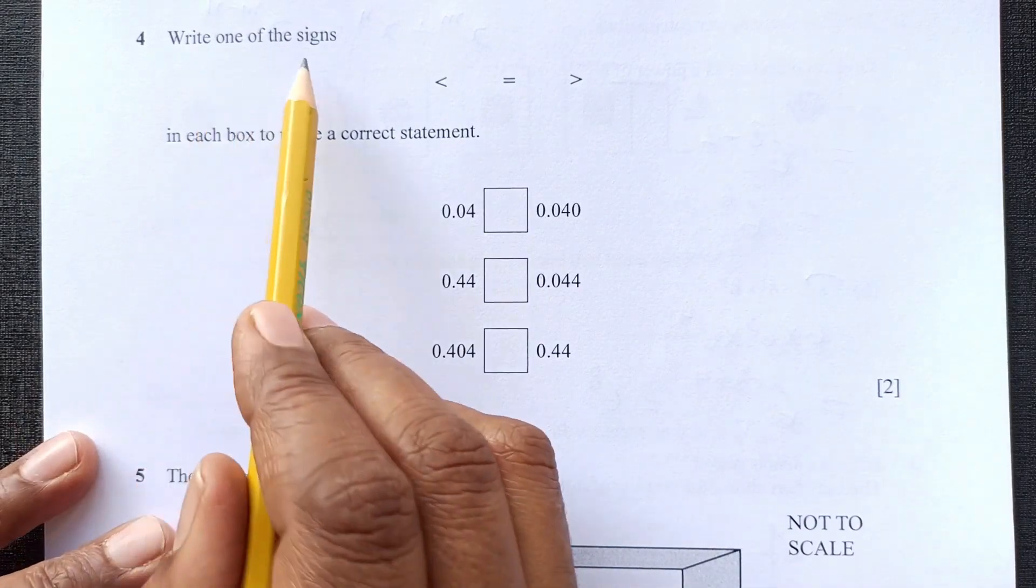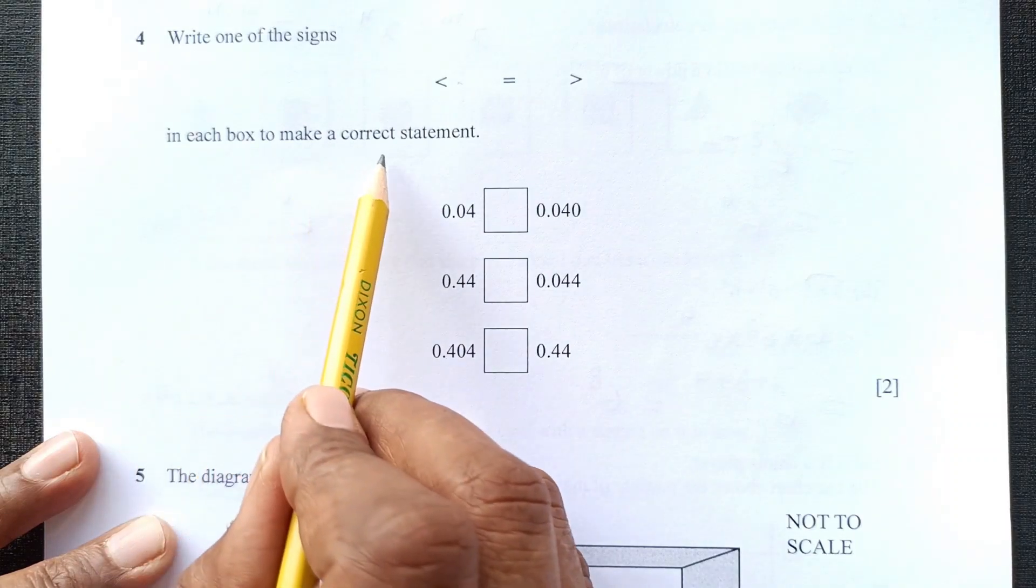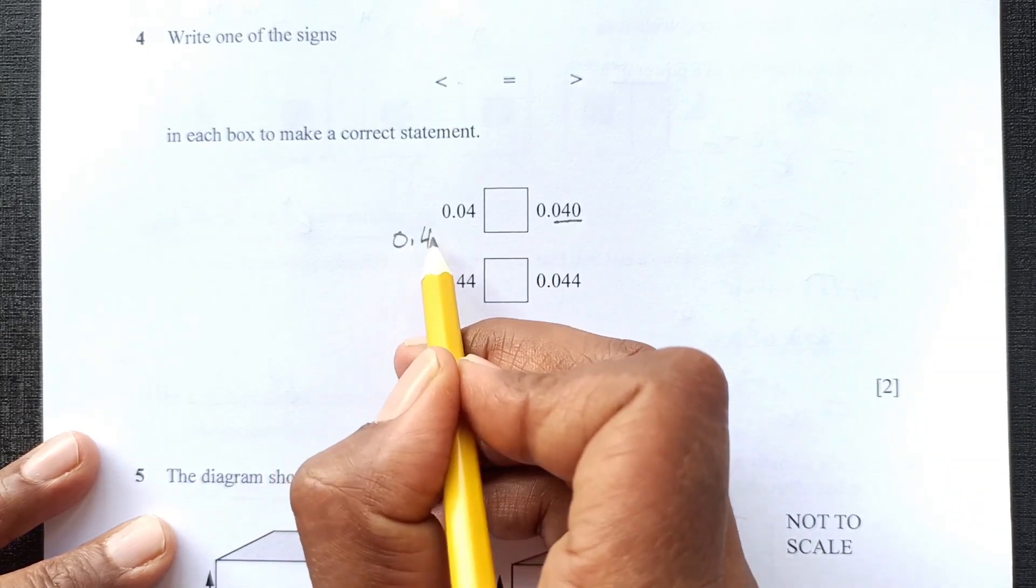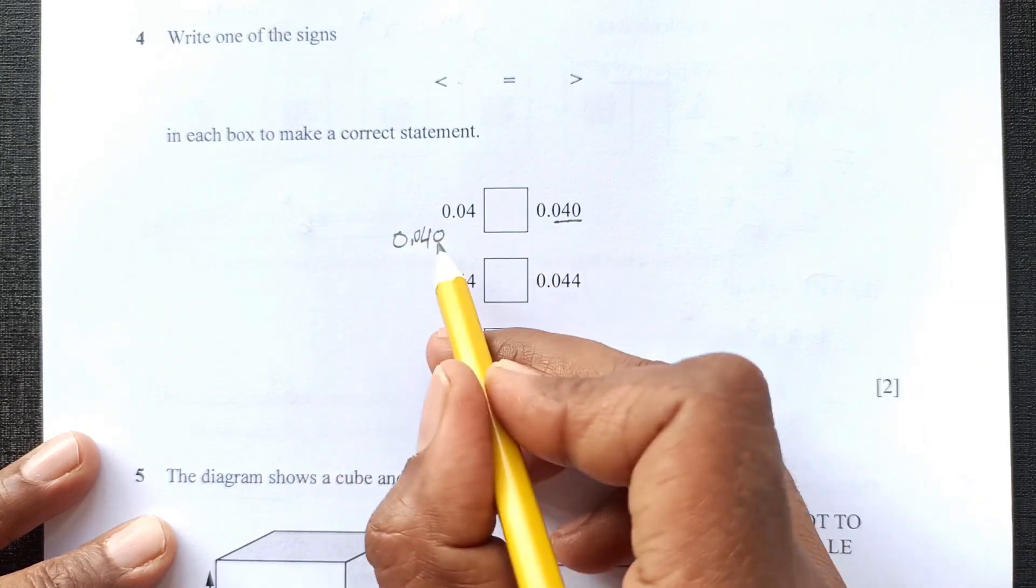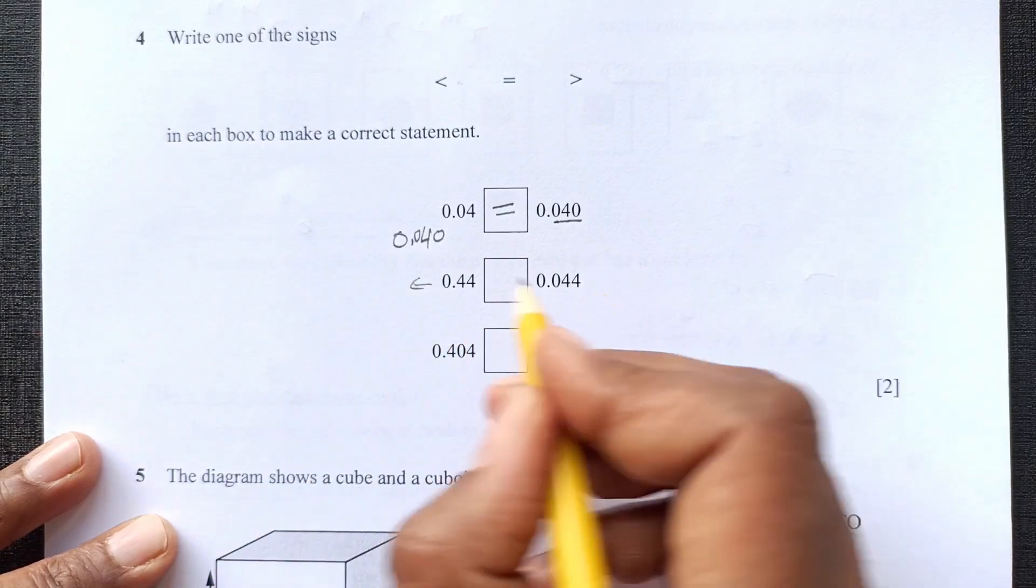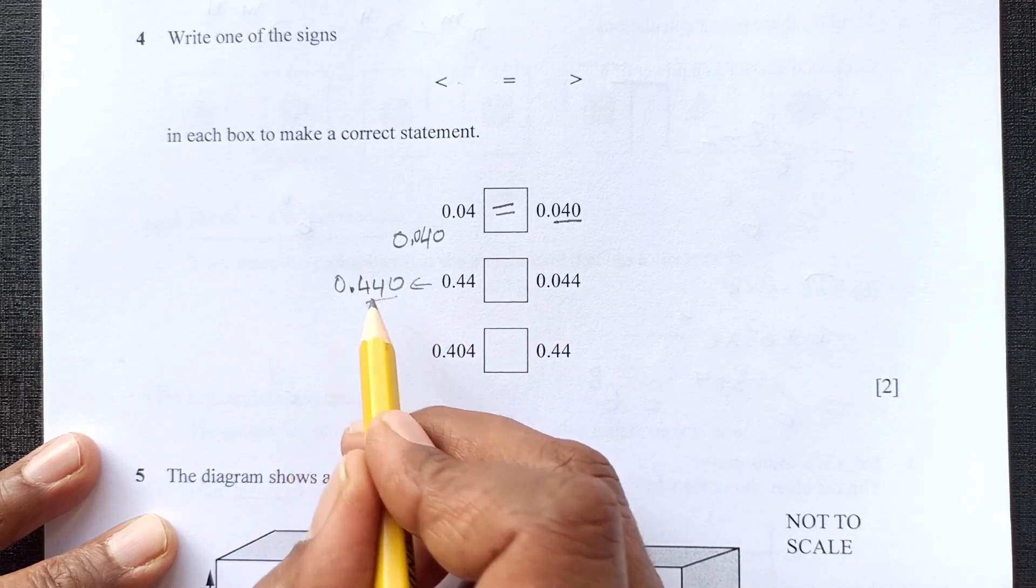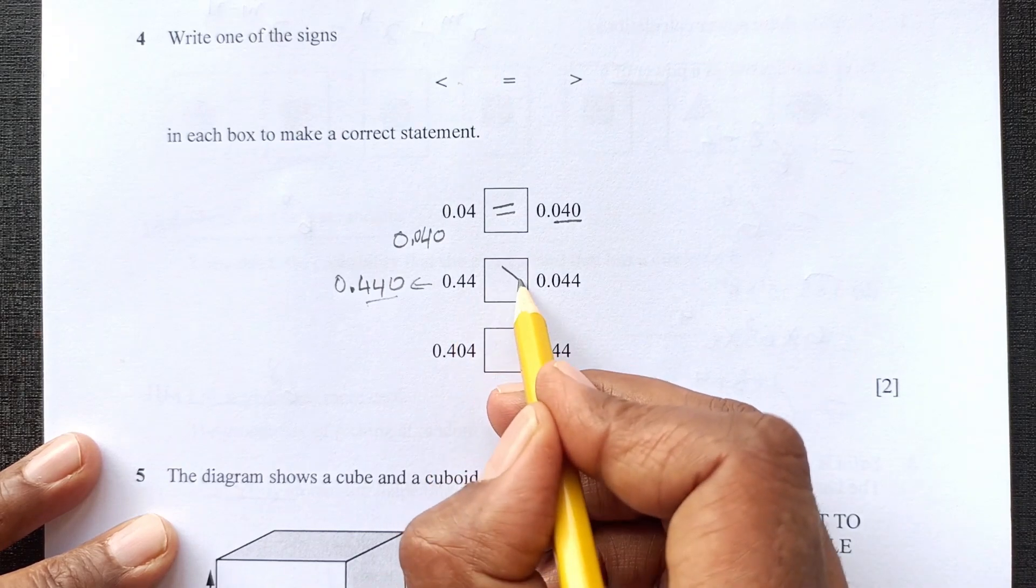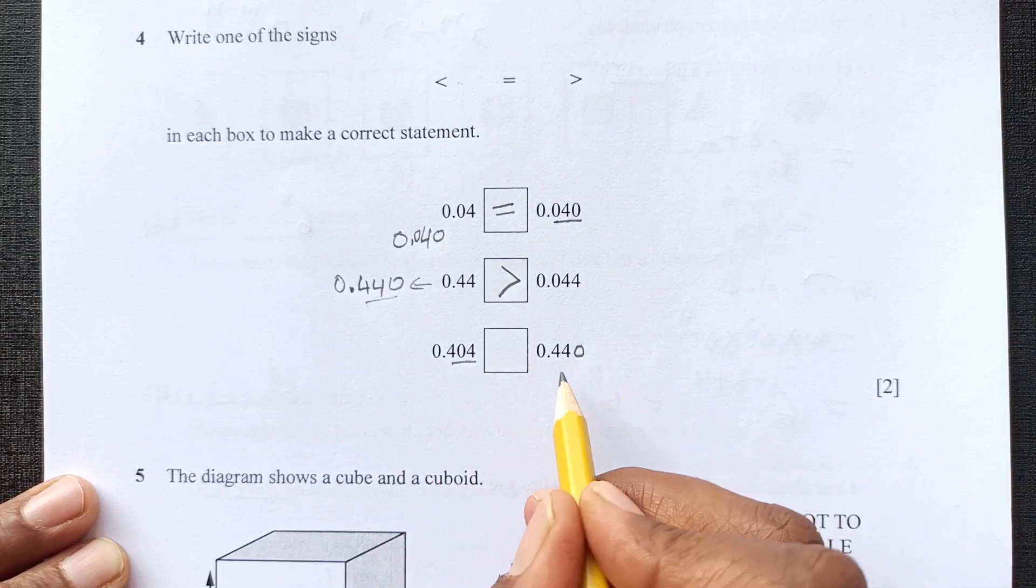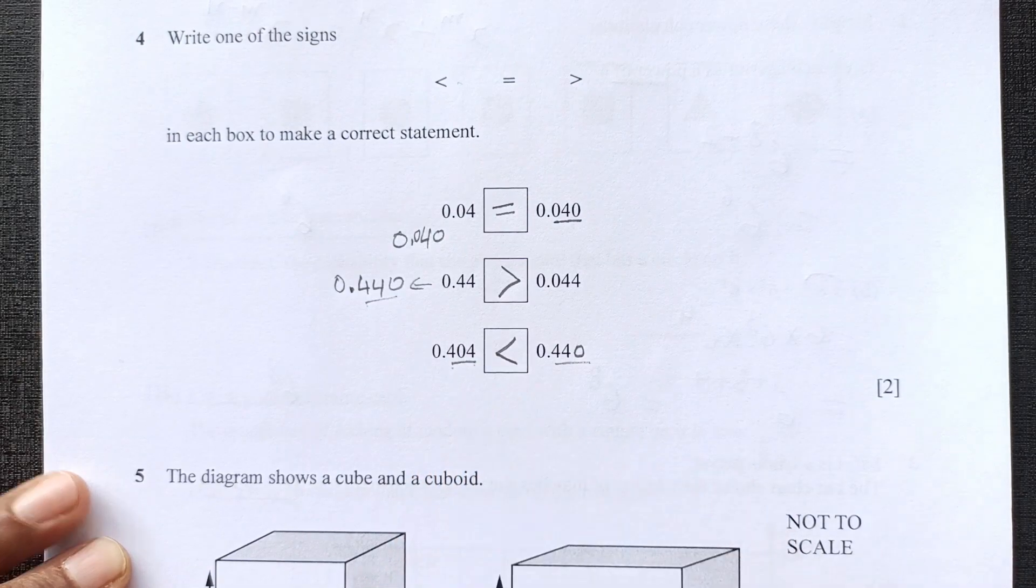Question 4. Write one of these signs. We have these signs here less than, equal and greater than in each box to make the correct statement. This is 0.04, this is 3 decimal places. We can make it 0.040 with 3 decimal places. So they are same, so this is equal. This is 0.44. I can write it down 0.440. This is 440 after decimal and this is 44. That means this one is greater. So sign will go to this side. And this one now 3 decimal places. If we add one decimal here, this is 440, this is 404. That means this is less than this one.